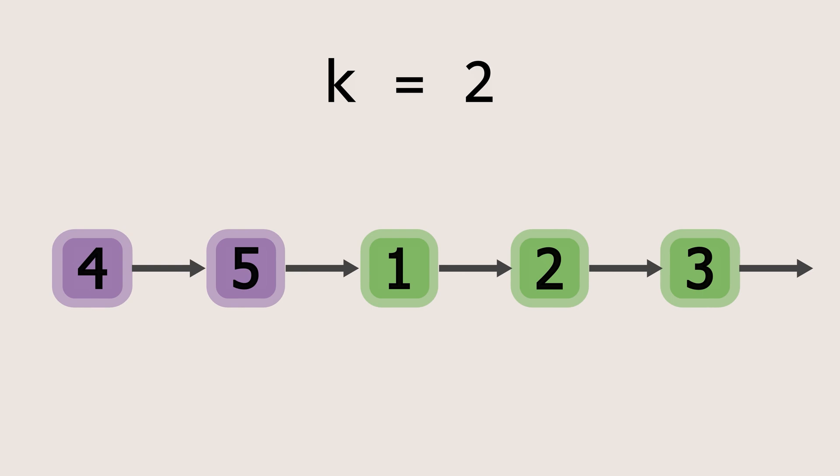Also, remember that if the value of k is greater than the size of the list, we don't need to rotate it k times. Instead, we can take k modulo the size of the list and rotate it that many times which will be equivalent. For example, if the value of k is 7, we can take 7 modulo 5, which is the size of this list, giving us 2.